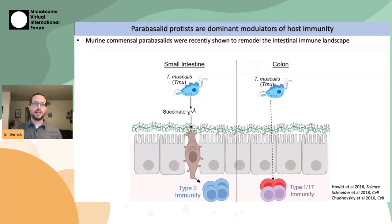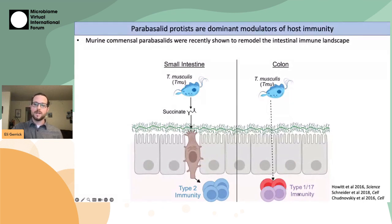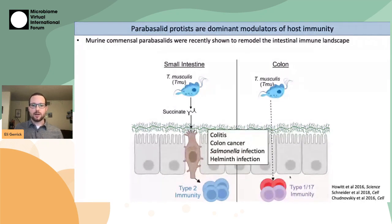T. musculus can actually have different immune responses depending on the region of the gut that it's colonizing. It causes type 2 immunity in the small intestine and type 1 and 17 immune responses in the colon. These immune responses caused by T. musculus have dramatic impacts on host susceptibility to both infectious and inflammatory diseases, from colitis and colon cancer to worm infection.